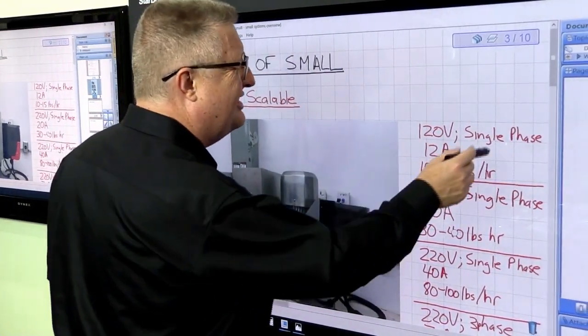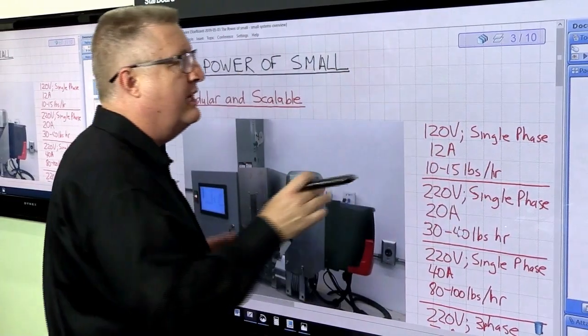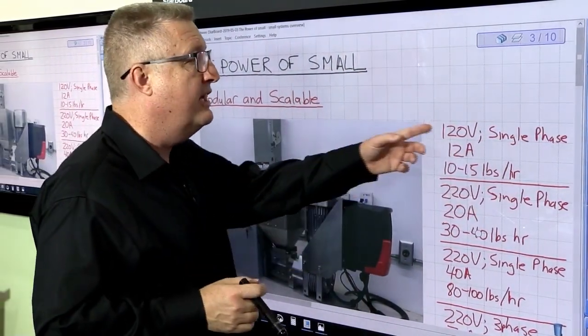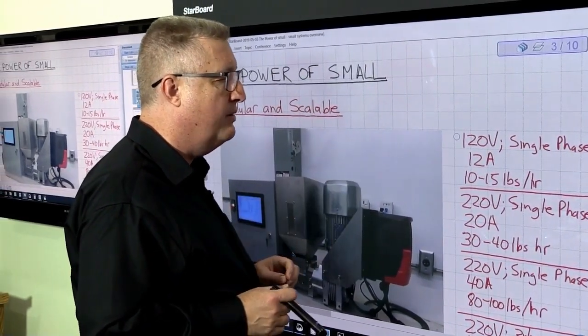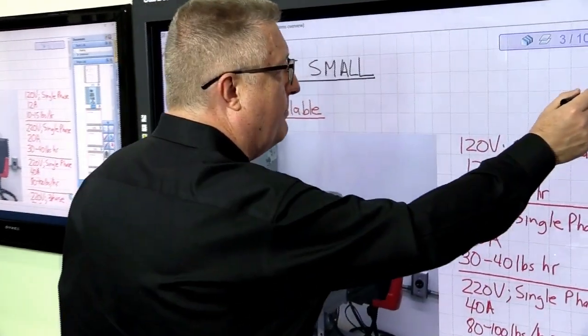We've got machines that are even smaller that can run on a little bench top. They're maybe three feet long and plug into 120 volts. They don't even need anything but 120 volt power.